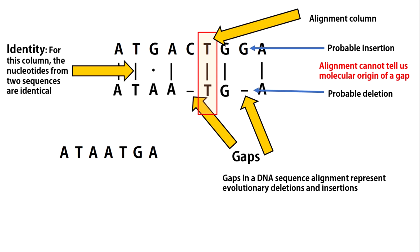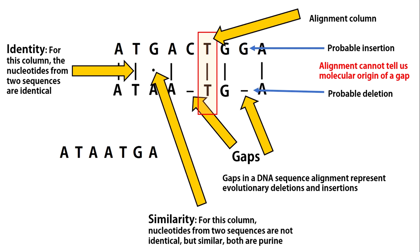In an alignment column, if two characters match perfectly, it is called sequence identity. Such an alignment column represents a conserved site of a protein or a gene. If two characters do not match identically but their chemical properties match, that is called a similarity. For example, we consider a sequence similarity if there are two purines or two pyrimidines in the same column.